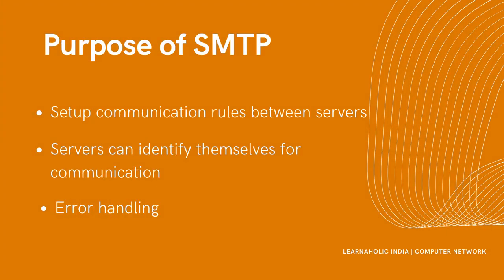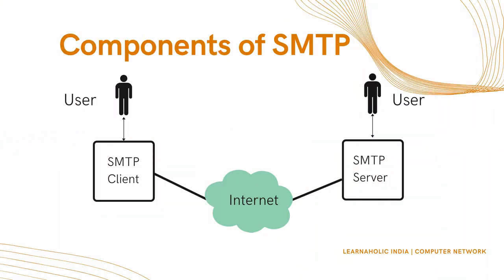The main purpose of SMTP is to set up communication rules between servers. The servers have a way of identifying themselves and announcing what kind of communication they are trying to perform. They also have a way of handling errors such as an incorrect email address. For example, if the recipient address is wrong, the receiving server replies with an error message.